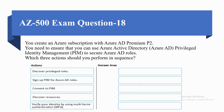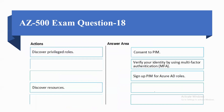Coming to the next question. You create an Azure subscription with Azure AD Premium P2. You need to ensure that you can use Azure Active Directory Privileged Identity Management to secure Azure AD roles. Which three actions should you perform in sequence? The actions are: Discover privileged roles; Sign up PIM for Azure AD roles; Consent to PIM; Discover resources; Verify your identity by using MFA. The correct sequence is: Verify your identity using MFA, Consent to PIM, and Sign up PIM for Azure AD roles.